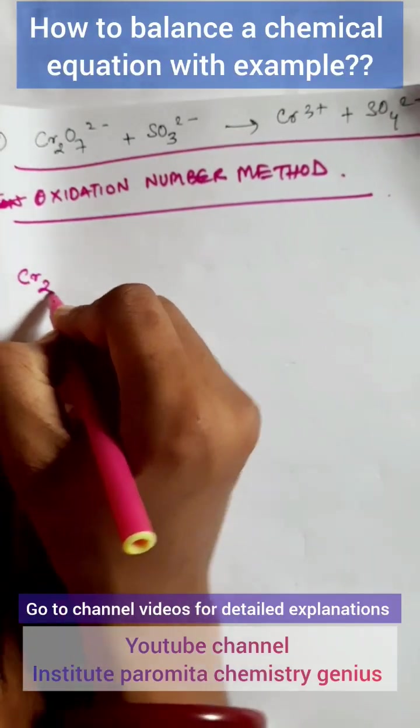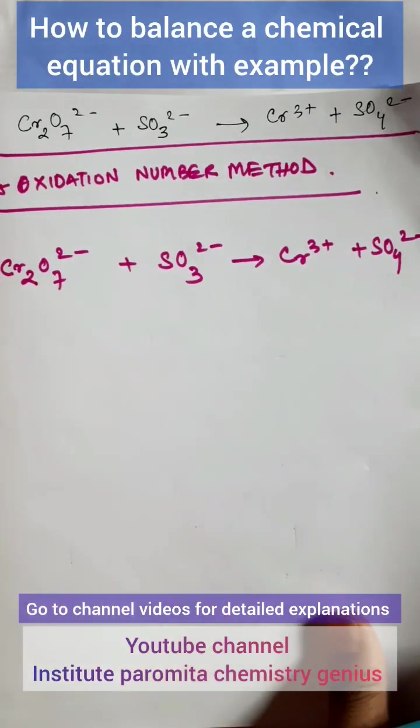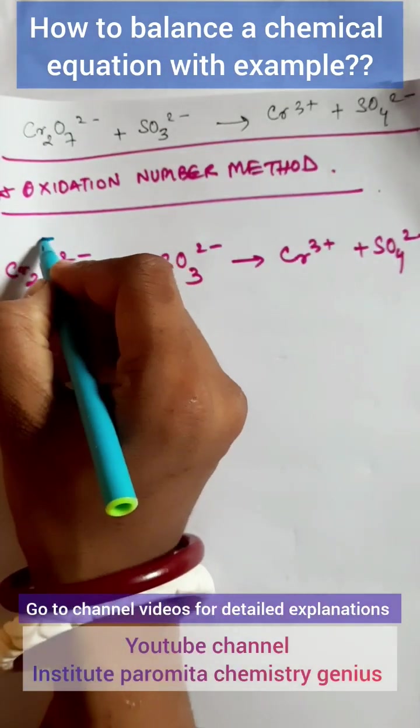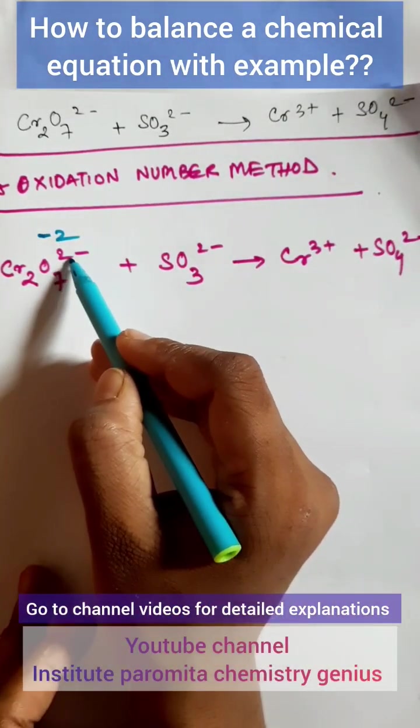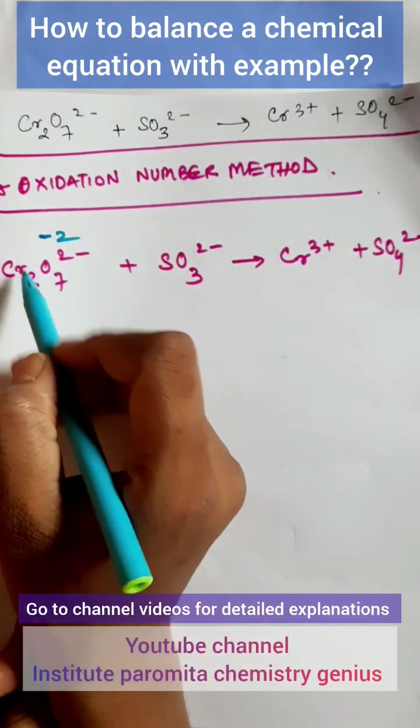Write the skeletal reaction Cr2. To find the oxidation number, we know if it is minus 2, minus 2 is for oxygen. So 7 times 2 is 14, 14 minus 2 is 12, 12 divided by 2.